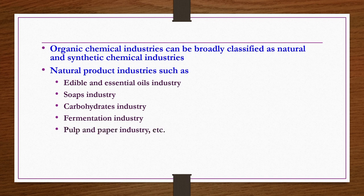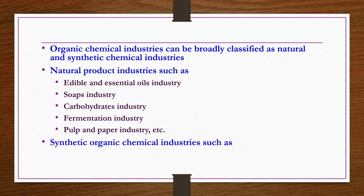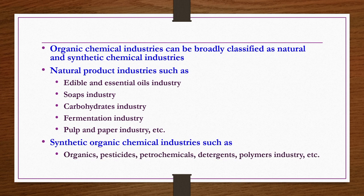Synthetic organic chemical industries include organics, pesticides, petrochemicals, detergents, and polymer industries — all of which come under synthetic organic chemical industries.